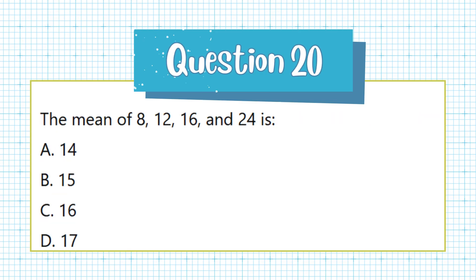Question 20. The mean of 8, 12, 16, and 24 is: a. 14, b. 15, c. 16, d. 17.